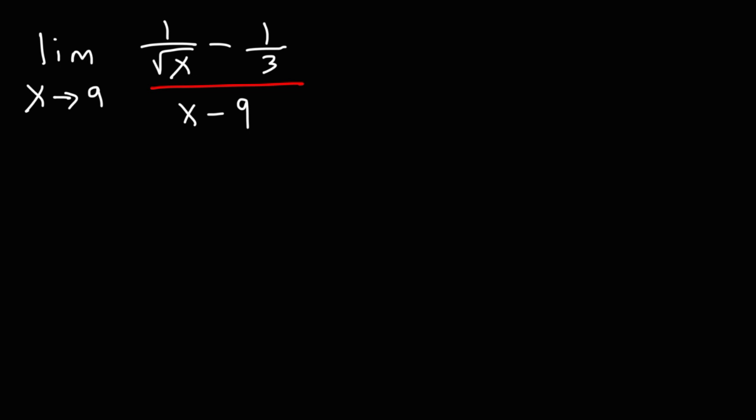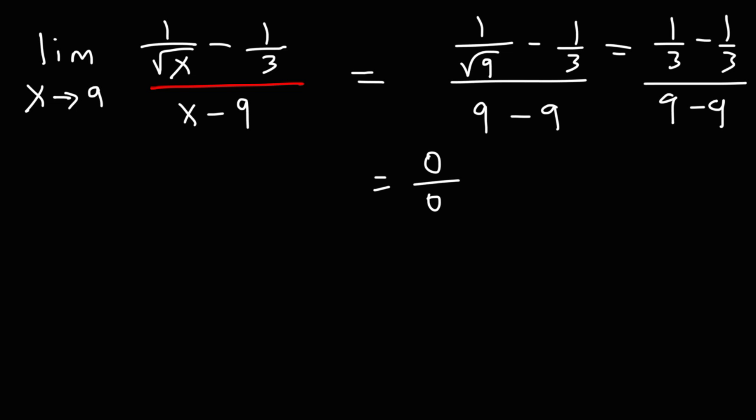Well you could try direct substitution. If you plug in 9, you're going to get 9 minus 9 on the bottom and on the top 1 over the square root of 9 minus 1 over 3. The square root of 9 is 3 and so you're going to get 0 over 0, which that's really not going to help us. So direct substitution is not going to work in this example.